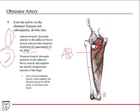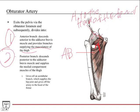The posterior branch dives down and goes behind the adductor brevis muscle. It gives off an acetabular branch, which goes up to supply the acetabulum region. Importantly, the acetabular branch then gives rise to the artery to the head of the femur, which in children provides a significant amount of blood supply to the femoral head.